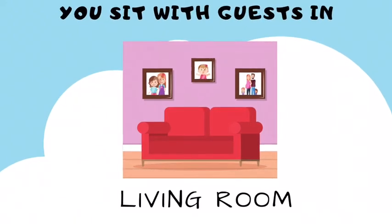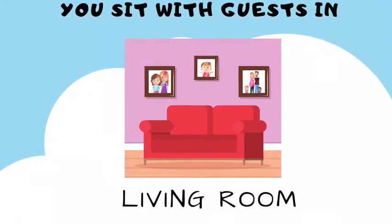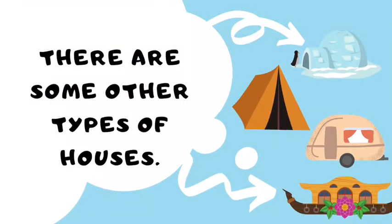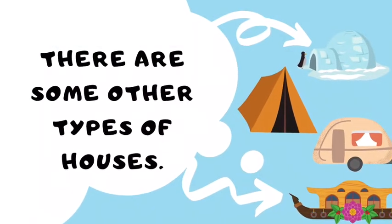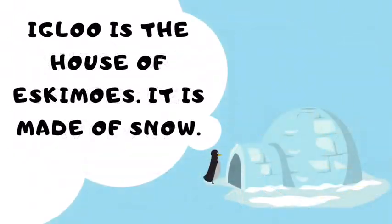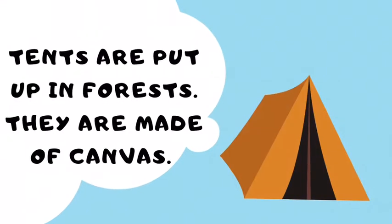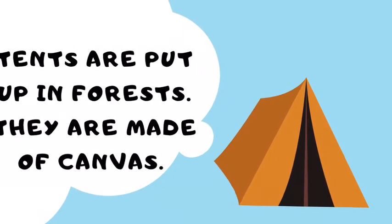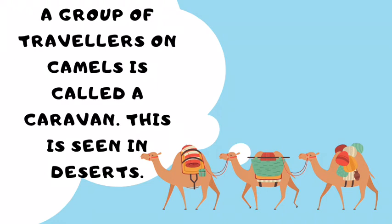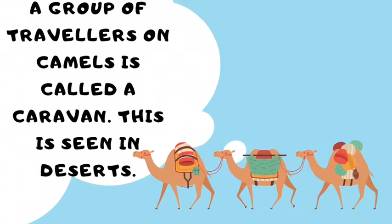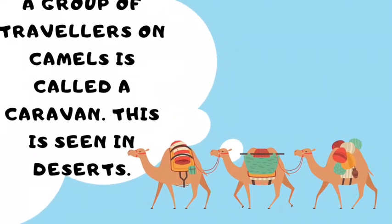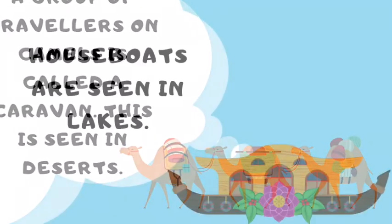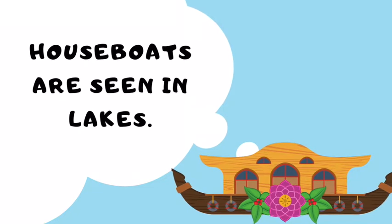You sit with guests in a living room. There are some other types of houses. An igloo is the house of Eskimos; it is made of snow. Tents are put up in the forest and are made of canvas. A group of travelers on camels is called a caravan, and it is seen in deserts. Houseboats are seen in lakes.